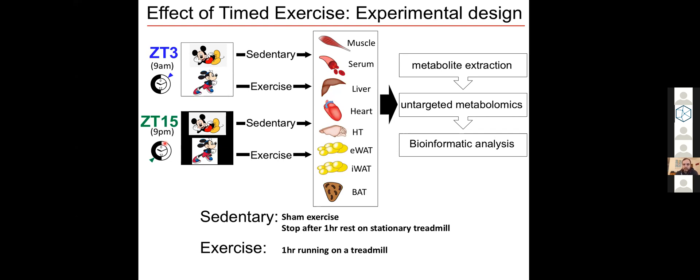At the end of the experiment, we collected muscles, serum, liver, heart, hypothalamus, epididymal white adipose tissue, inguinal white adipose tissue, as well as brown adipose tissue. All these tissues were processed and the metabolites were measured using non-targeted metabolomics.